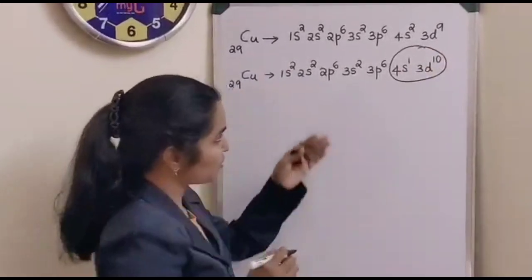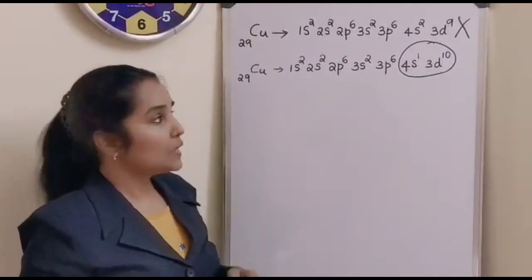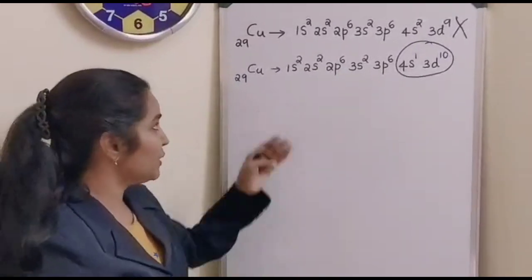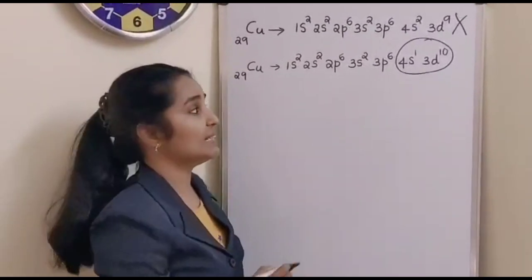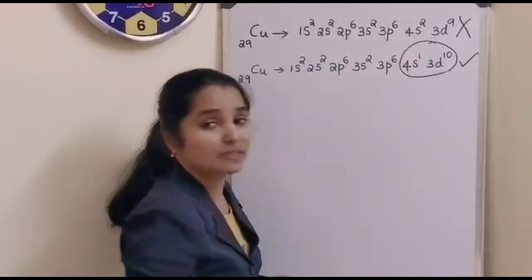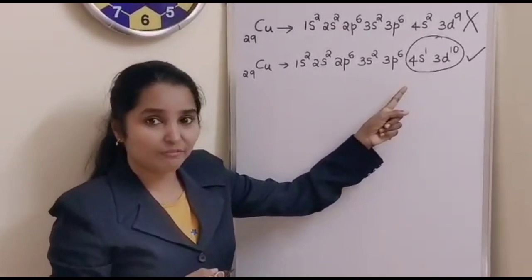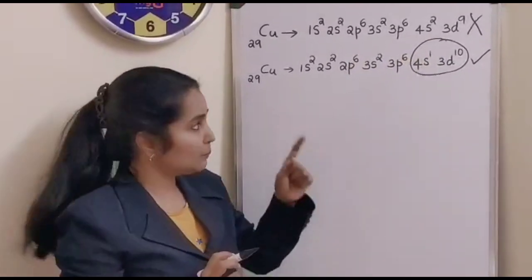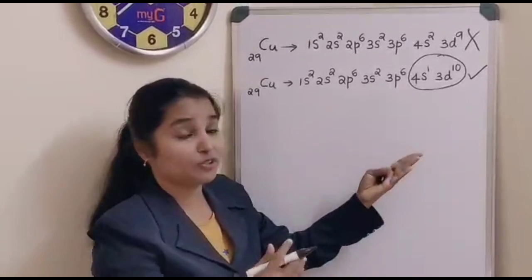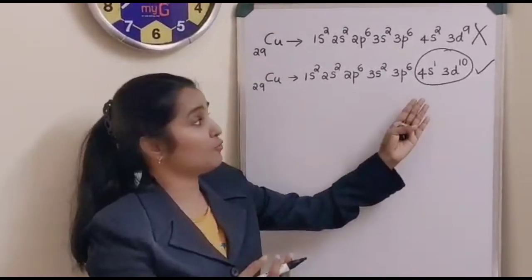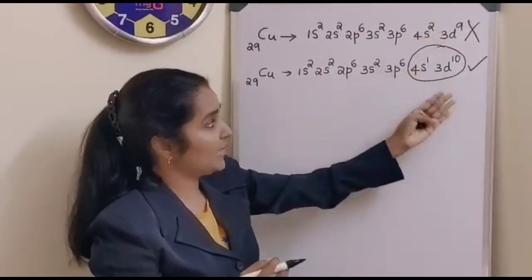So this should be the supposed electronic configuration. But it is not the electronic configuration of copper. Instead, copper prefers to have the configuration 1s2, 2s2, 2p6, 3s2, 3p6, 4s1 and 3d10. That extra 1 electron is moved to the next higher energy level, making 3d9 become 3d10.